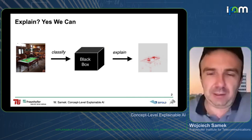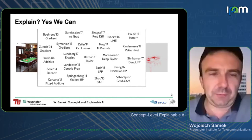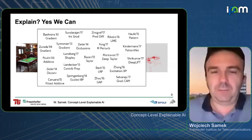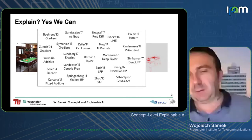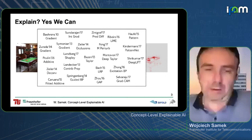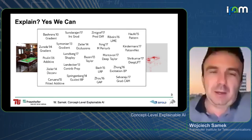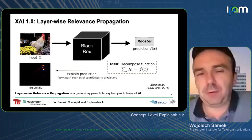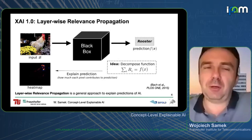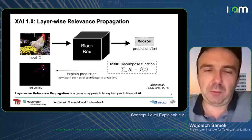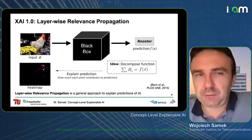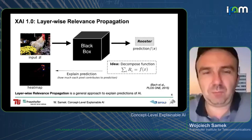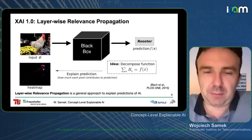There are various techniques to explain classification decisions — gradient-based explanation methods, occlusion-based methods, propagation-based methods. In this talk, I will mainly focus on one technique, because we will need it for the concept-level explanation technique I will present later. I will first briefly go through layer-wise relevance propagation, a popular technique to explain predictions of neural networks by decomposition.